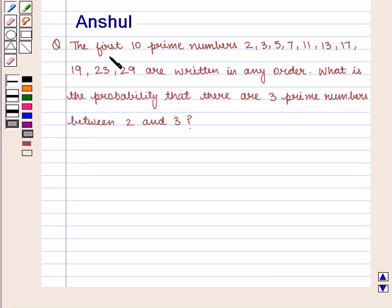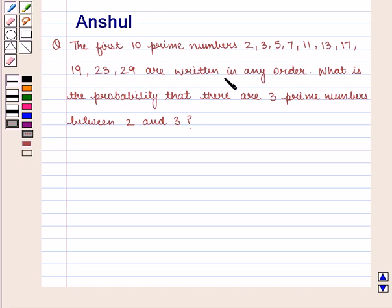The first 10 prime numbers — 2, 3, 5, 7, 11, 13, 17, 19, 23, 29 — are written in any order. What is the probability that there are 3 prime numbers between 2 and 3?